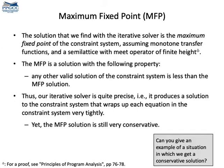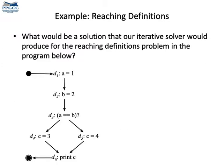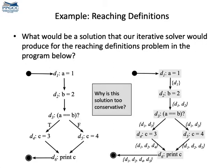However, even though the solution is tight, it is still very conservative. For instance, what would be a solution to reaching definitions for this program? Perhaps you can stop the video and then compute reaching definitions for this program, assuming that the true part of the branch goes to the left side of the CFG. Here's the solution.